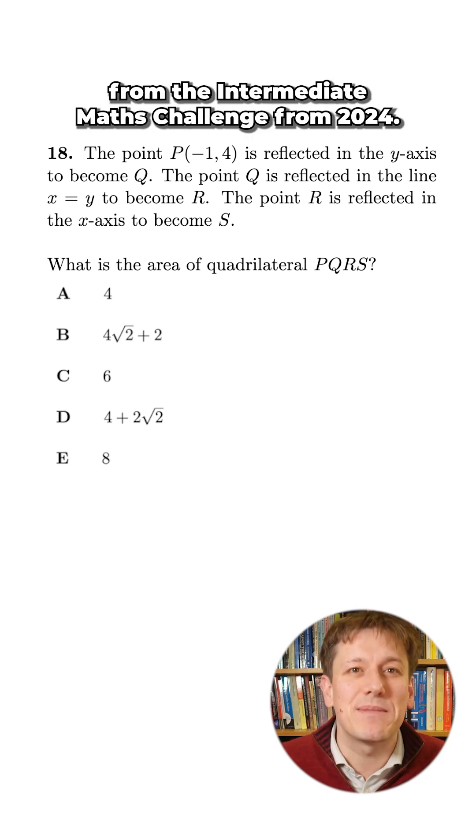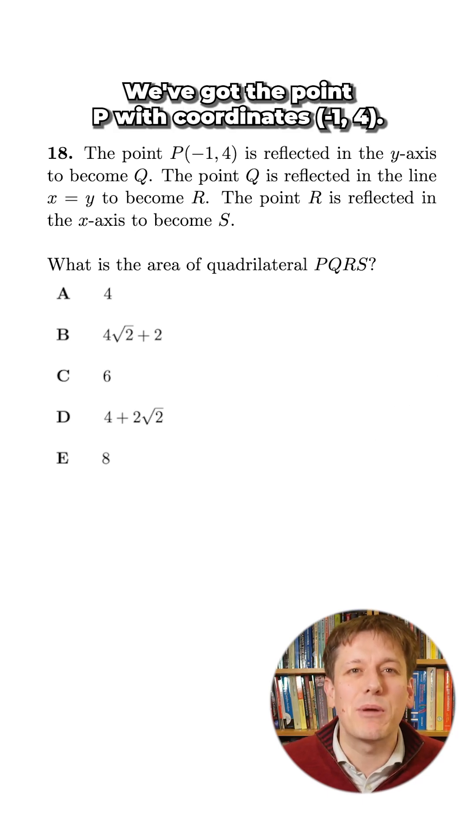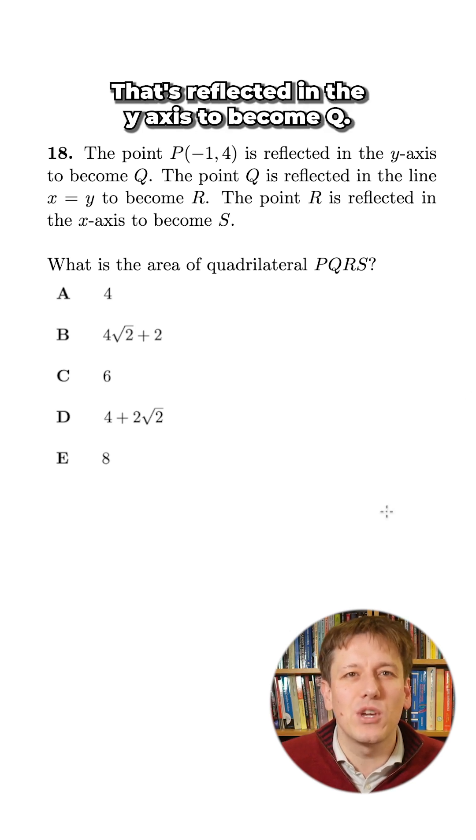This is quite a tricky question from the intermediate maths challenge from 2024. We've got the point P with coordinates minus 1, 4 that's reflected in the y-axis to become Q.